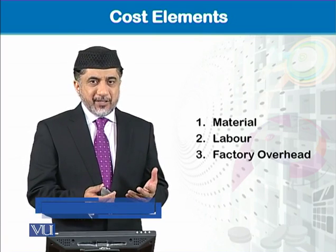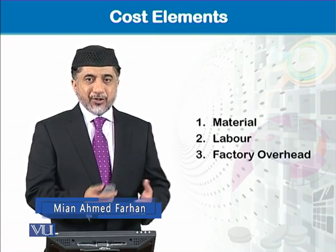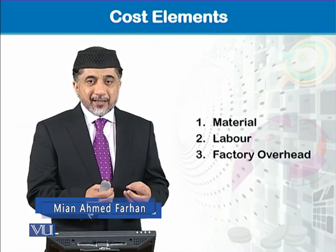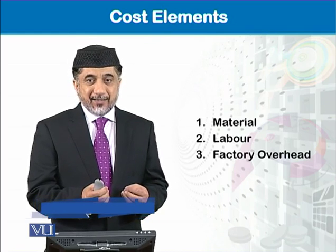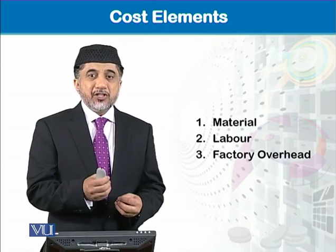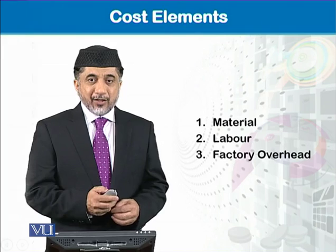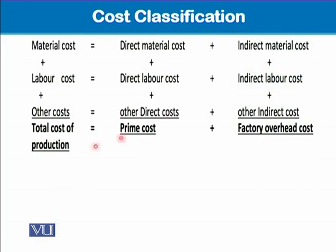When we say material cost, labor cost, and factory overhead cost, there are certain characteristics associated with these costs. Material cost can be direct material cost or indirect material cost. In the same way, labor cost can be direct labor cost or indirect labor cost.